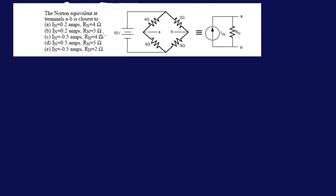To find RN, we have RN is going to be 4 parallel with 6 in series with 2 parallel with 8. So RN is going to be 24 over 10 plus 16 over 10, and this is 40 over 10, so RN is 4 ohms.